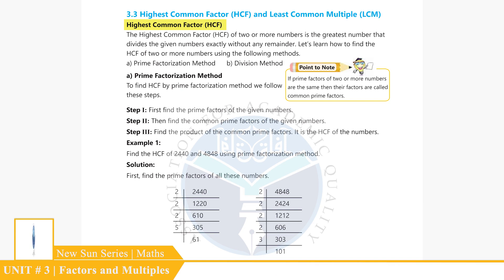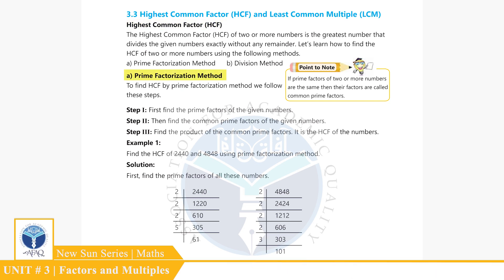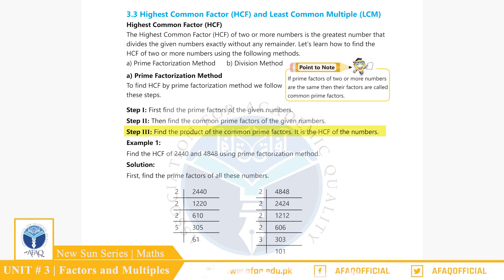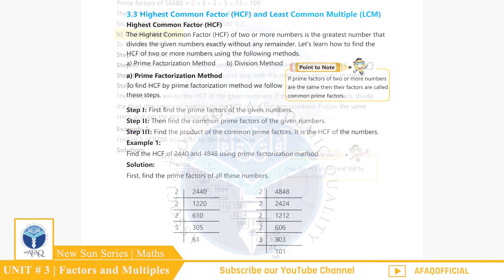بچوں، HCF کو مندرجہ ذیل طریقوں سے معلوم کیا جا سکتا ہے۔ نمبر ون: Prime Factorization Method۔ اس method کے steps یہ ہیں — Step 1: تمام دیئے ہوئے numbers کے prime factors معلوم کریں۔ Step 2: common factors معلوم کریں۔ Step 3: common factors کو multiply کریں — یہ ہے HCF۔